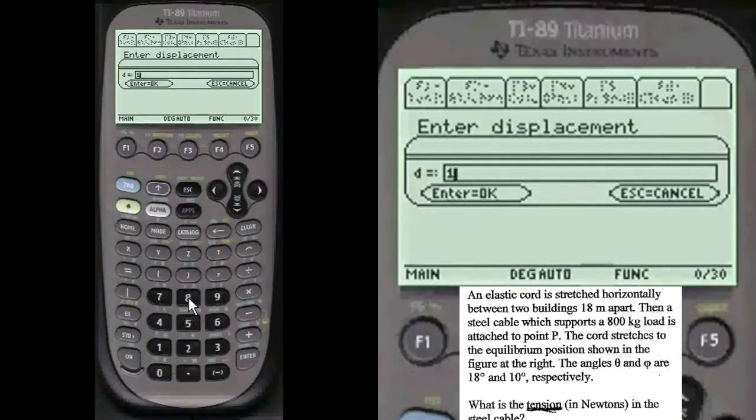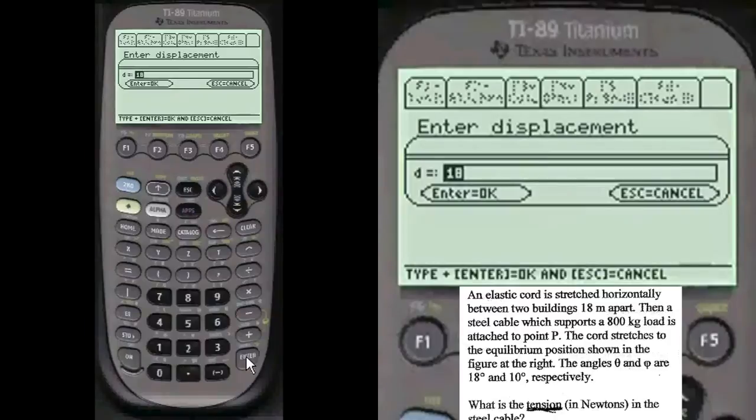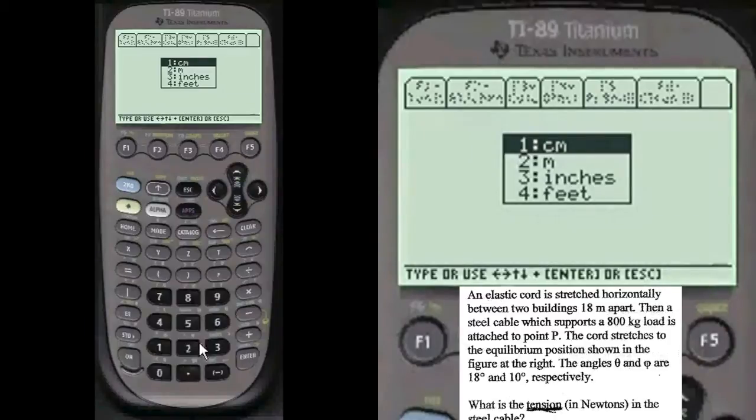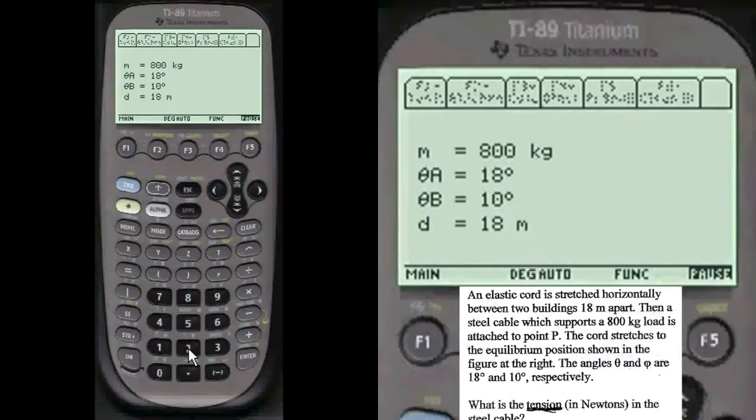Notice that they trick you again in physics. They love to trick you. They give you 18 distance the same thing as the first angle. So you know, that can throw you, they could give you 22 or something for the distance and make it completely different so that you wouldn't be confused. But they love that in physics. And of course we've got meters so we've got to go number two in meters.